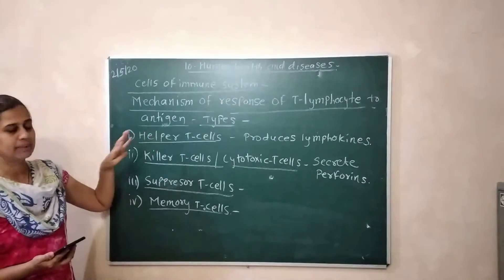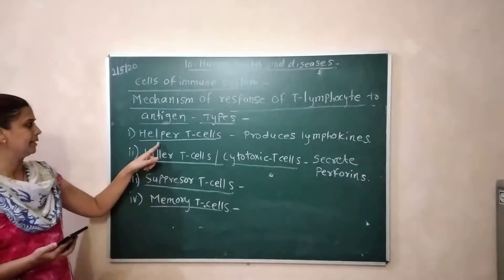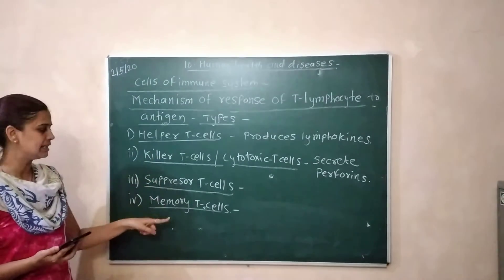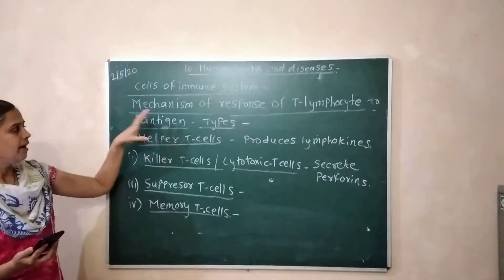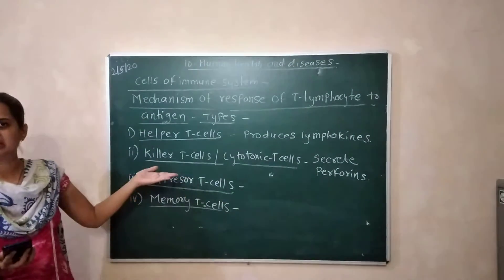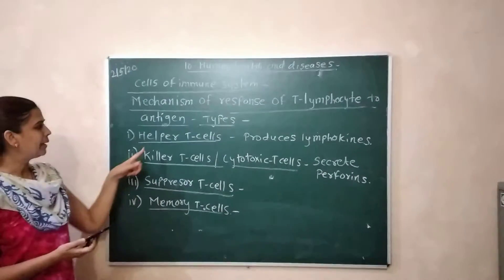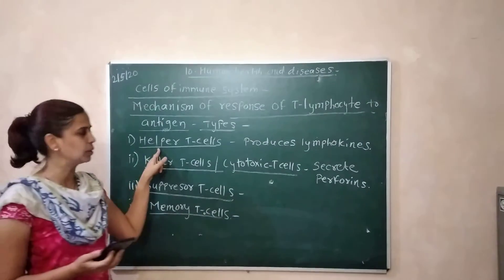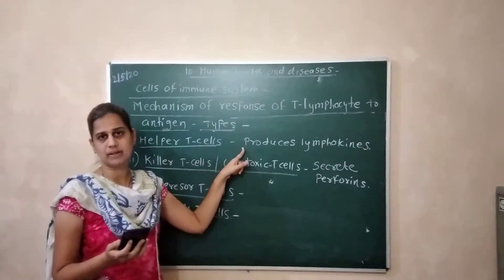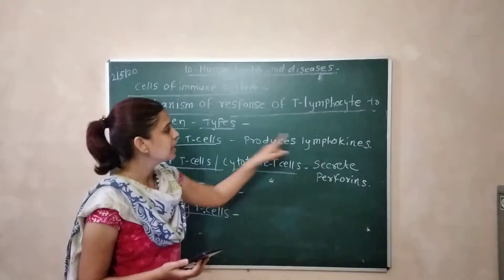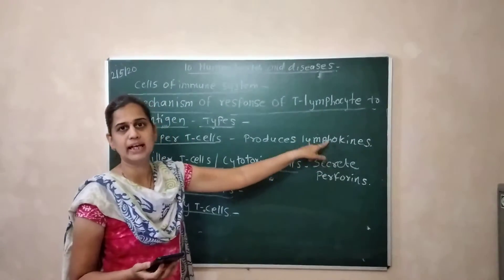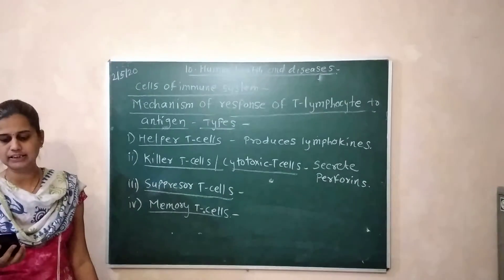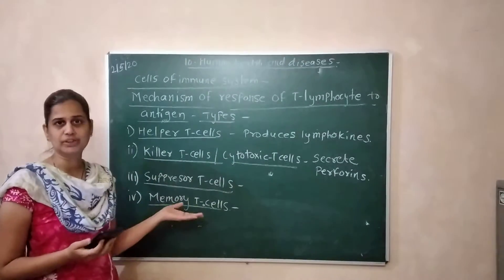These are the four types of T-lymphocytes: helper T-cells, killer T-cells, suppressor T-cells, and memory T-cells. The first type is helper T-cells. Helper T-cells produce lymphokines, which are hormone-like substances that are secreted to perform several types of functions.